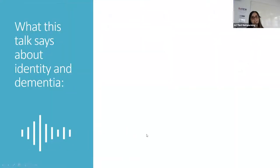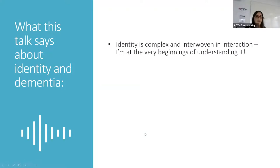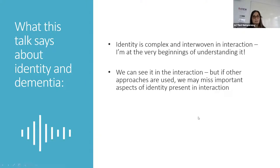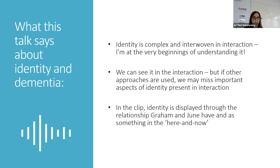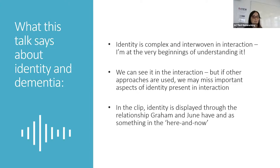So what does this talk say about identity and dementia? It shows that identity is complex and interwoven in interaction, and I'm at the very beginnings of understanding it. We can see it in the interaction, but if other approaches are used, we may miss important aspects of identity present in the details. In this clip, identity is displayed through the relationship that Graham and June have — through their talk, they 'do' being in a relationship. It's also displayed as something in the here and now: while June may not remember what she does at the day centre, she does remember Graham and their relationship in the present, which is something I think is really beautiful about this clip.